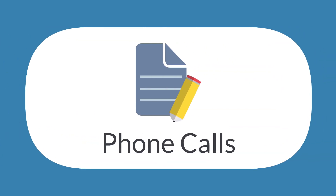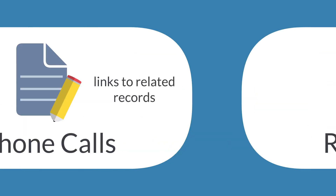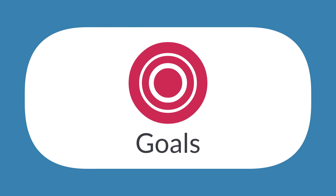The phone calls portlet provides a list of upcoming phone calls that you need to make, as well as links to records where you could see more information on the calls. The reminders portlet provides a list of either overdue or nearly due tasks. When you set up this portlet, you can determine which tasks appear and how close to their due dates they should appear. The goals portlet gives you information on your current goals, helping you know if you're on track or falling behind.